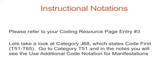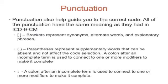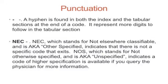Let's take a look at Category J68, which states Code First T51 through T65. Go to Category T51 and in the notes you'll see the Use Additional Code notation for manifestations. Punctuation also helps guide you to the correct code; all punctuation has the same meaning as in ICD-9-CM. Brackets represent synonyms, alternate words, and explanatory phrases. Parentheses represent supplementary words that can be absent and not affect the code selection. A colon after an incomplete term is used to connect one or more modifiers to make it complete.